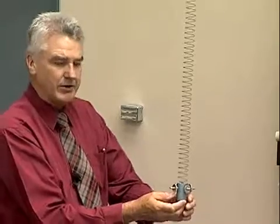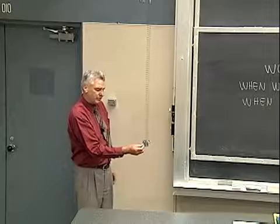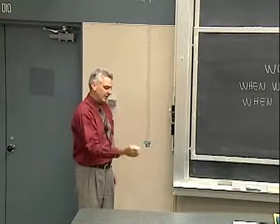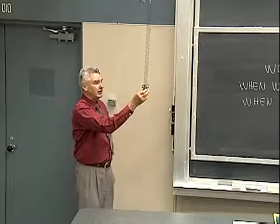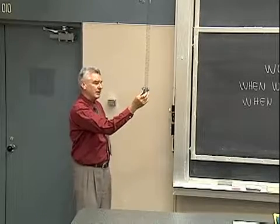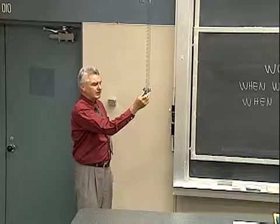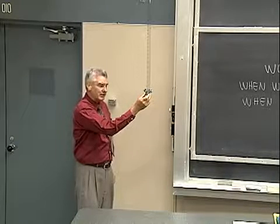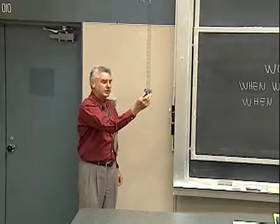Now I'm going to start by doing some work on the system. I'm going to add some energy to the system by exerting a force with my hand and moving that force through a distance, increasing its gravitational potential energy. And now that it has that gravitational potential energy, when I release it, watch what happens — the total energy will remain constant as it gets transferred from one form to another.